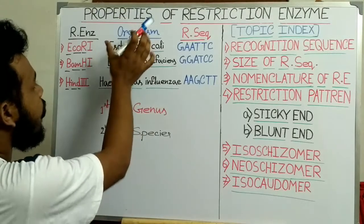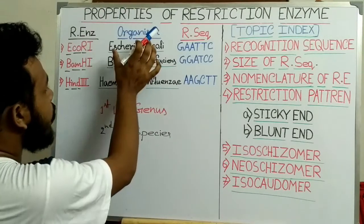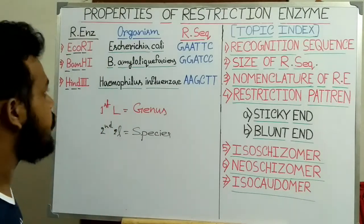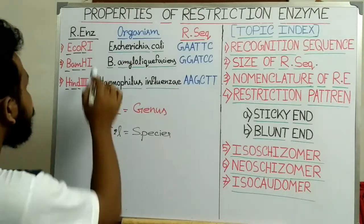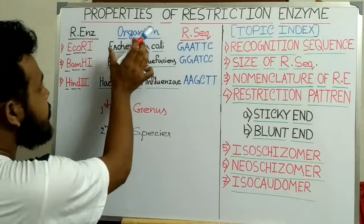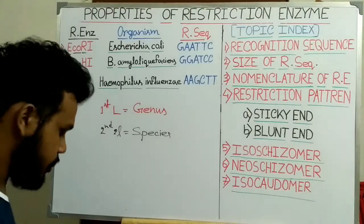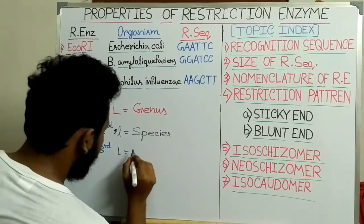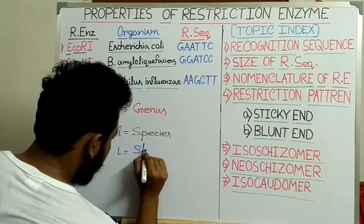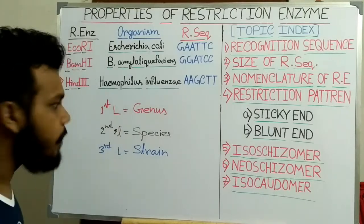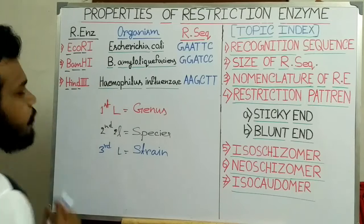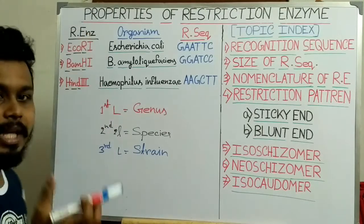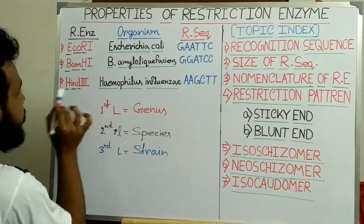The third letter signifies the strain from which these restriction enzymes are isolated — that means which type of strain of the organism the restriction enzyme comes from. For Escherichia coli, the R in EcoRI indicates it is isolated from the R strain of E. coli. The third letter signifies the strain name. For BamHI, the H indicates it is from the H strain of Bacillus amyloliquefaciens.